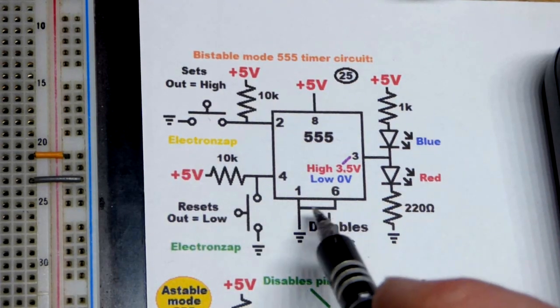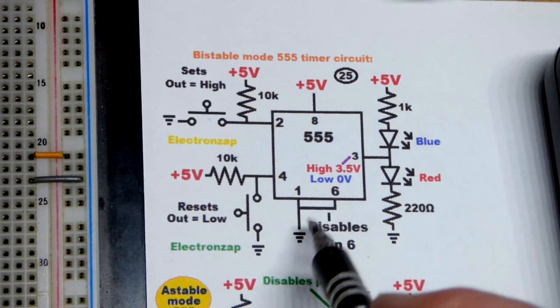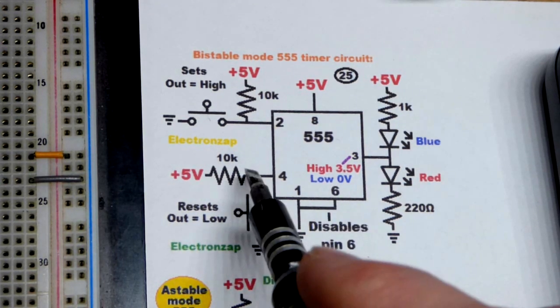Pin 6 is the opposite. You have to go to ground to prevent it from doing anything. Have a low enough voltage.